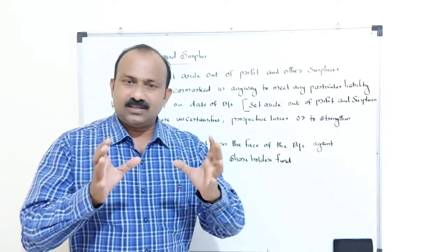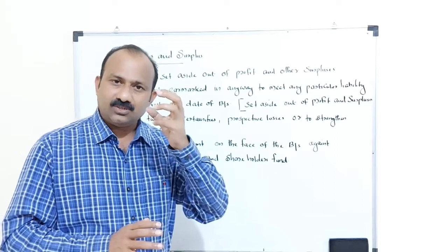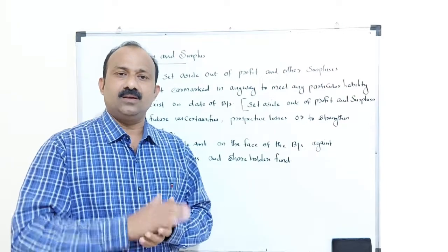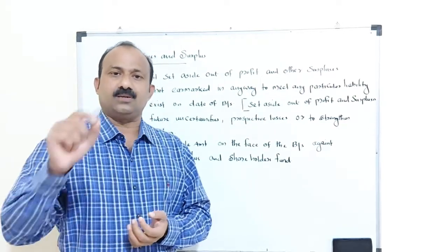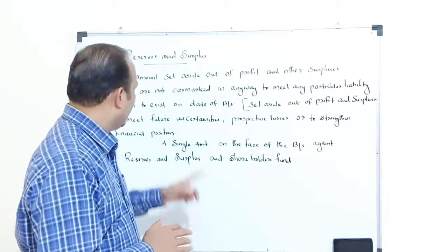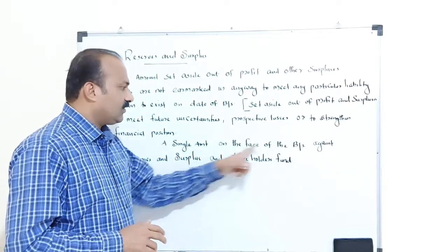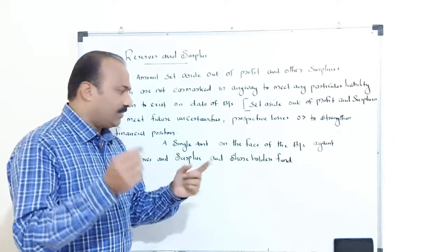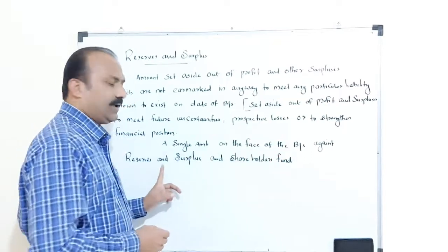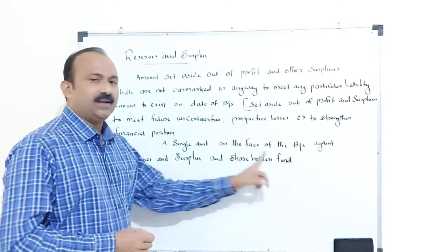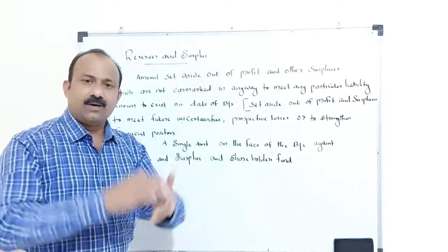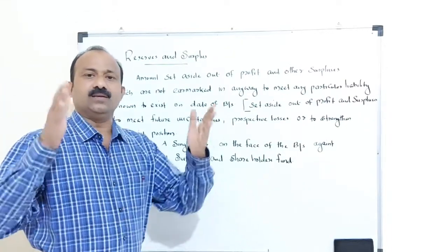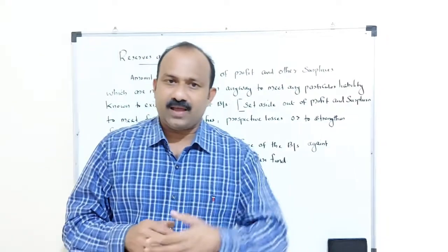Our main aim is to strengthen the financial position of a company. In order to strengthen the financial position of the company, we have to maintain proper or adequate reserves and surplus. When preparing the balance sheet of a company, you can see a single amount on the face of the balance sheet under the heading reserves and surplus within the shareholders' fund. Only one amount appears under shareholders' fund for reserves and surplus.